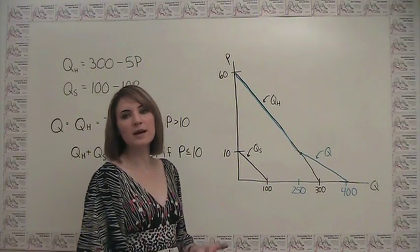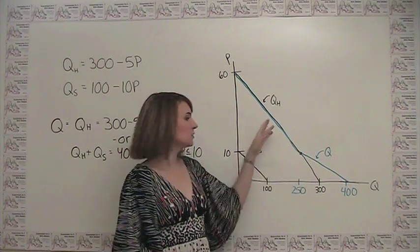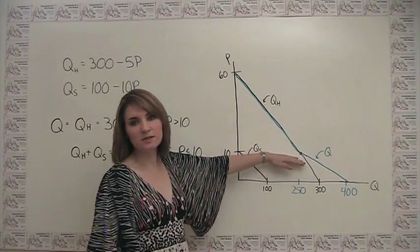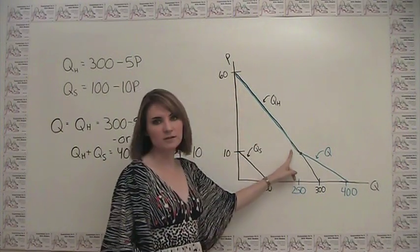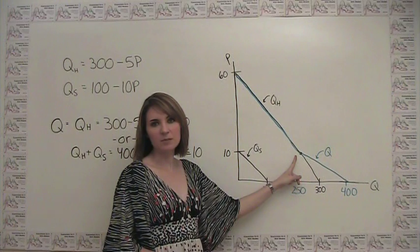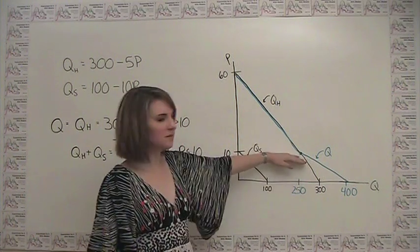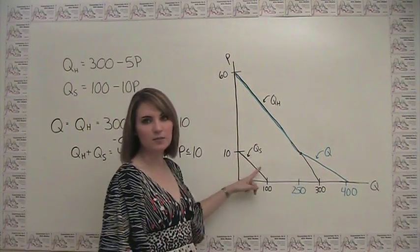In order to account for this graphically, we need to think about each part of the demand curve separately. So we said for prices above 10, the demand was equal to the demand for happy people by themselves, so our total market demand just follows the original happy people demand curve. And then at prices 10 or below, we have to add in the demand of these sad people here.